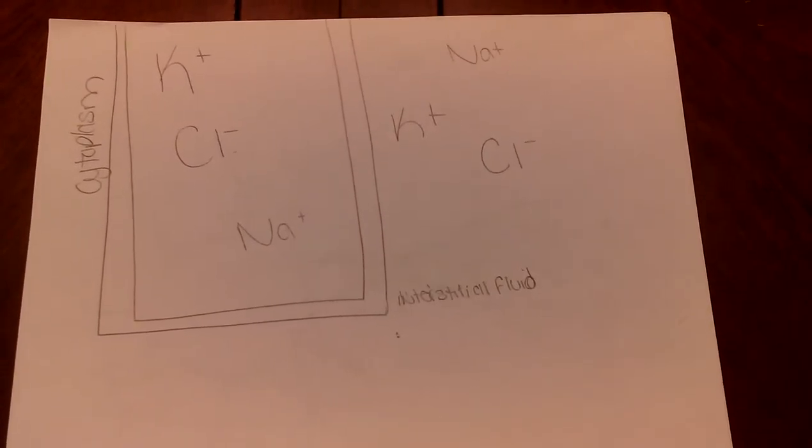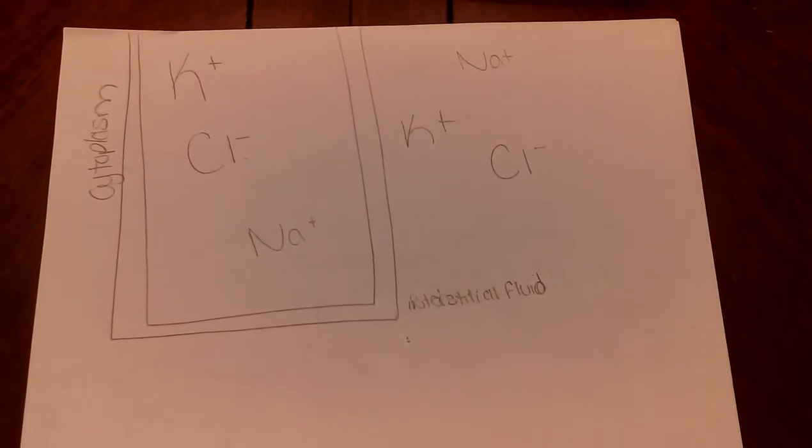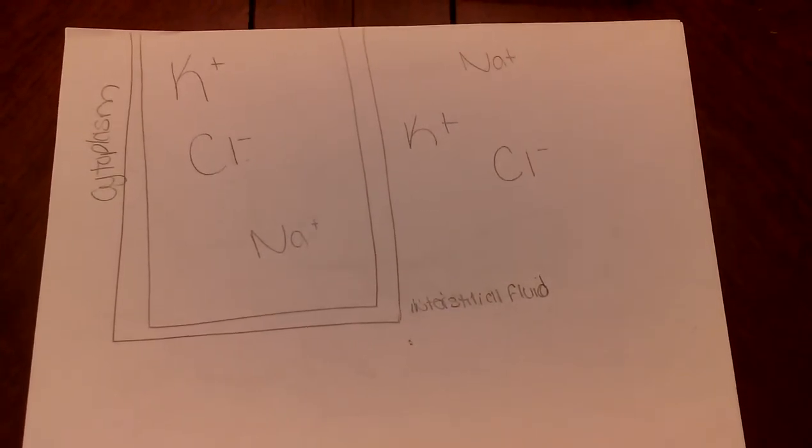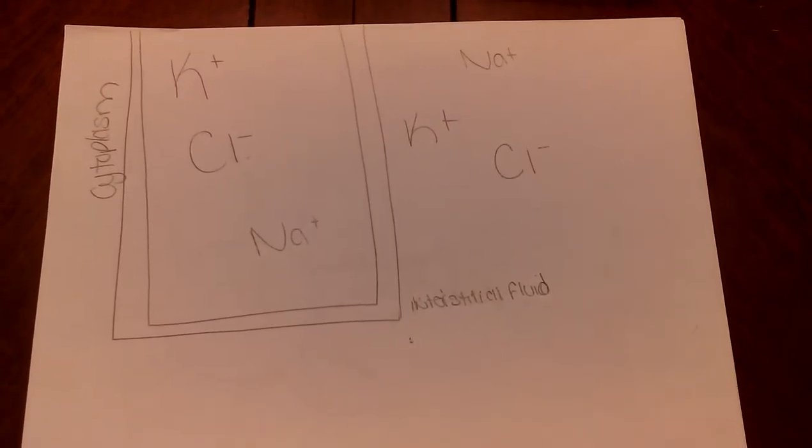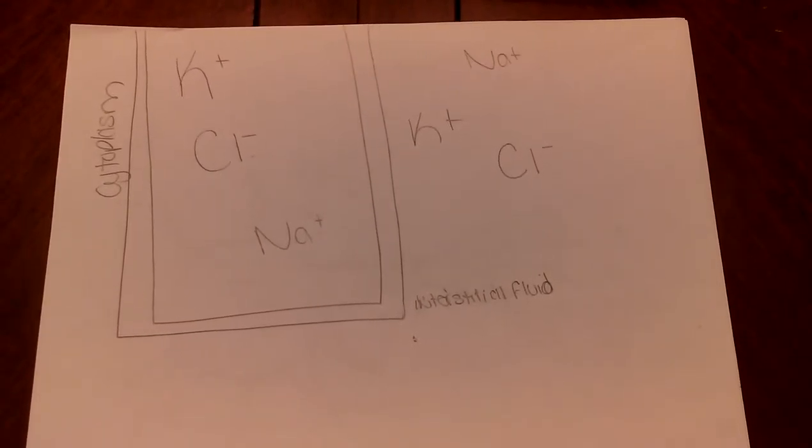Here we see that the sodium ions are more concentrated outside of the cell. Once the pore is open, the sodium ions are going to want to move inside of cell B to reach equilibrium. Electrostatic pressure is needed for the sodium ions to reach equilibrium.